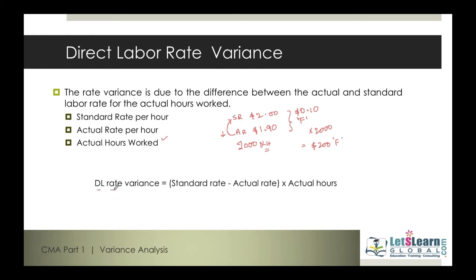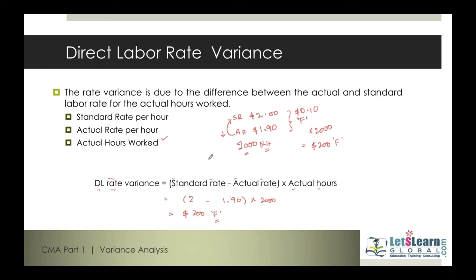The formula to calculate direct labor rate variance — since it is a rate variance, both rates should be within the brackets: (Standard Rate minus Actual Rate) times Actual Hours Worked. Using the example: ($2.00 − $1.90) × 2,000 = $200 favorable variance. The actual rate is less than the standard rate, so you get a favorable variance, denoted by F. This is a replica of direct material price variance.